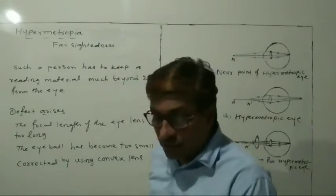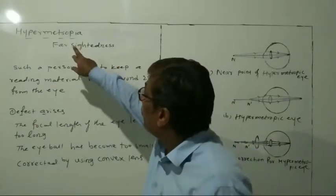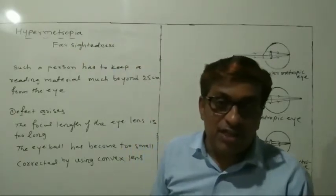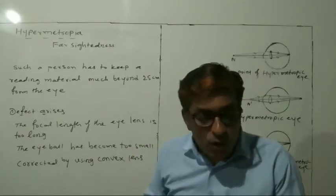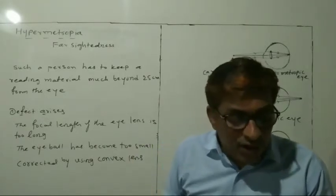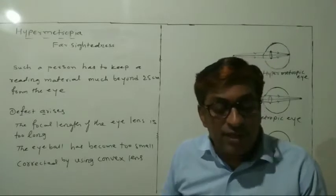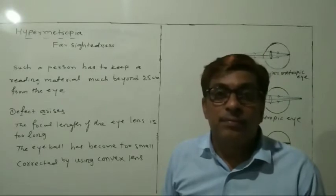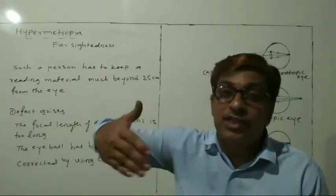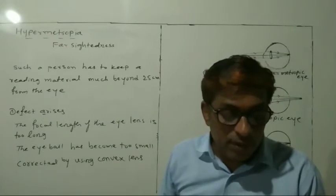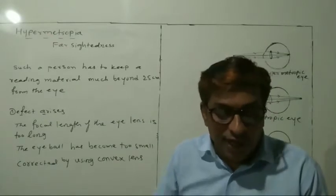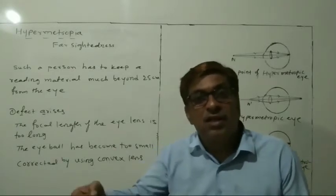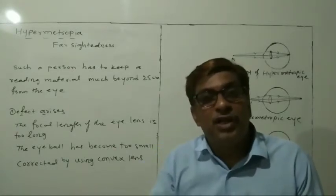Farsightedness, also called hypermetropia. A person with hypermetropia can see the distant objects clearly, but cannot see the near objects distinctly or properly.